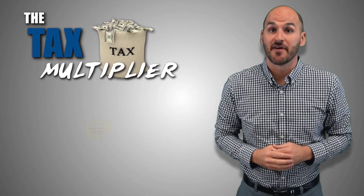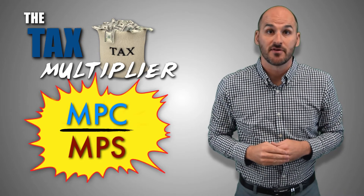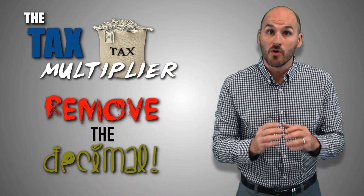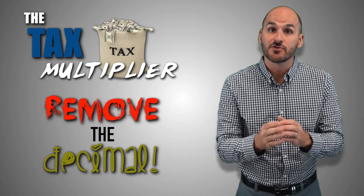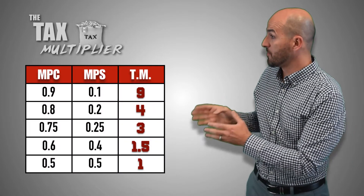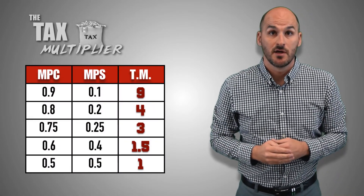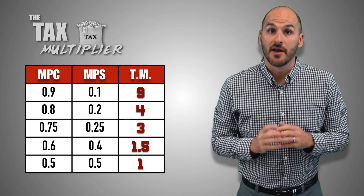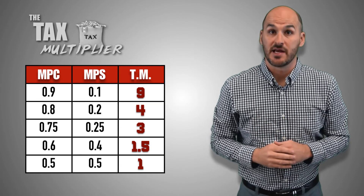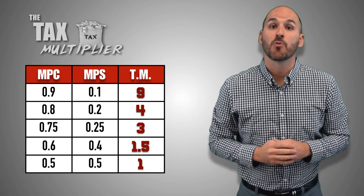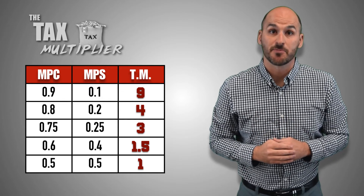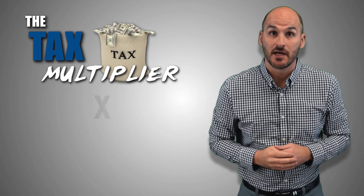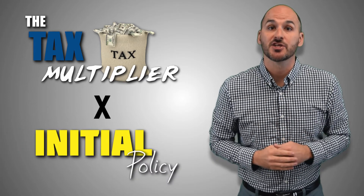The tax multiplier can be found by dividing the marginal propensity to consume by the marginal propensity to save. Here's a quick tip: when dividing the MPC by the MPS, remove the decimal points — this simplifies the equation and gives you the tax multiplier with less hassle. Here are the most common tax multipliers: MPS of 0.1 gives a tax multiplier of 9; MPS of 0.2 gives 4; MPS of 0.25 gives 3; MPS of 0.4 gives 1.5; MPS of 0.5 gives 1. Once you have the tax multiplier, multiply it by the initial change in tax policy to find the full potential change in real GDP.